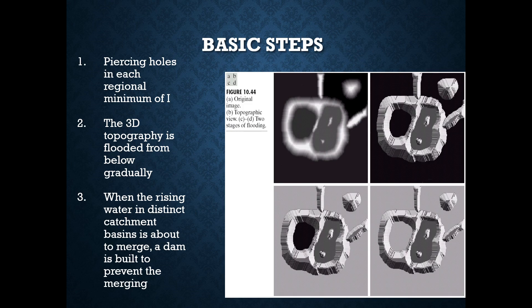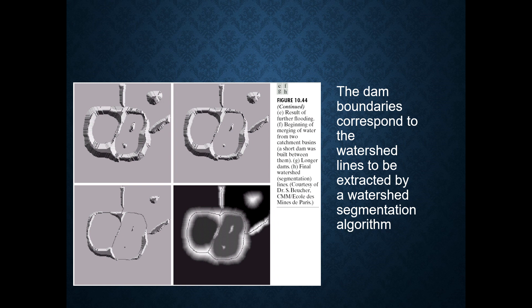The basic steps involved are piercing holes in each region minimum of an image. The 3D topography is flooded from below gradually. When the raising water in distant catchment basins is about to merge, the dam is built to prevent the merging.